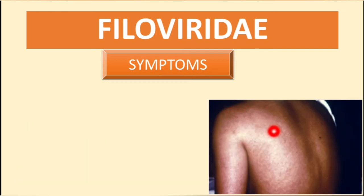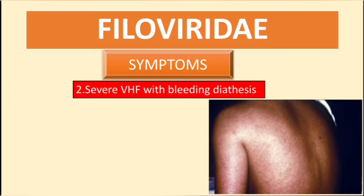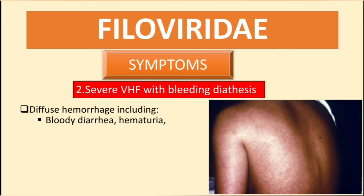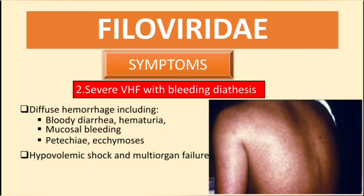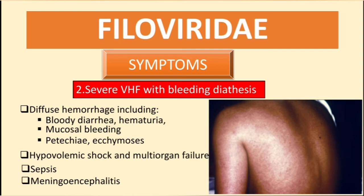Severe viral hemorrhagic fever with bleeding diathesis is characterized by diffuse hemorrhage including bloody diarrhea, hematuria, mucosal bleeding, petechiae, and ecchymosis. In addition, the patient may have hypovolemic shock and multiorgan failure. Sepsis and disseminated intravascular coagulation (DIC) are also complications, and there may also be meningoencephalitis.